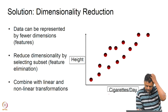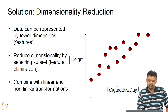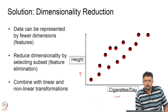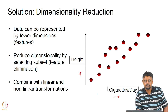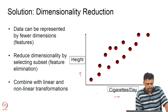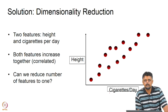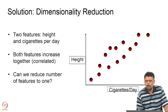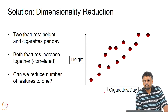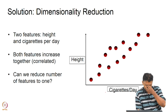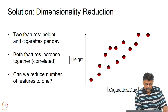Here we have data with 2 features: number of cigarettes per day and height. This is a sample of the population and at this point we don't worry about what this data was collected for — we just know these 2 features are present. What is important to observe is that the features increase together, so they are correlated. I'd like you to recall the naive Bayes algorithm where the assumption is that features are not correlated.